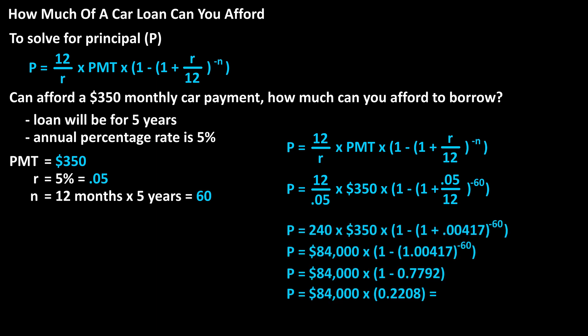I've done all the steps for the calculations in the correct order of operations on the screen. And after doing the calculations, we get an answer of $18,546.75 rounded off as the amount you could afford to borrow to get a $350 monthly payment.